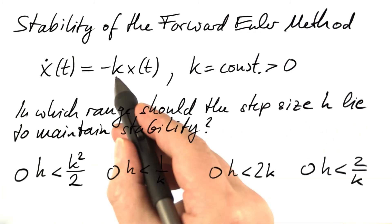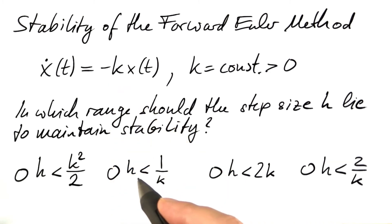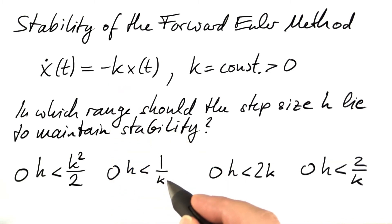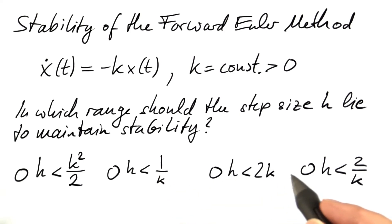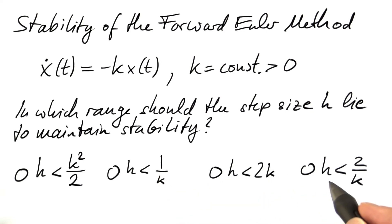Should the step size be smaller than k squared over 2, k being our constant? Should it be smaller than the inverse of that constant? Should it be smaller than twice that constant? Or should it be smaller than 2 over that constant?